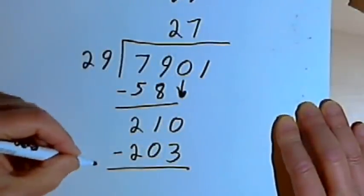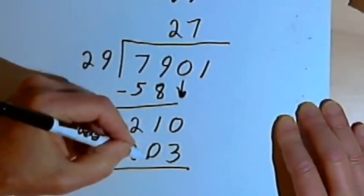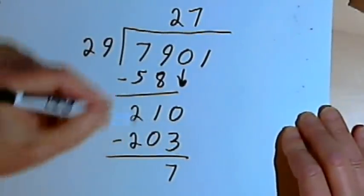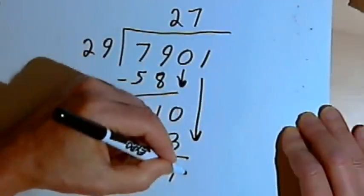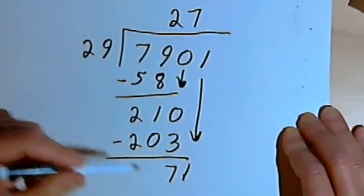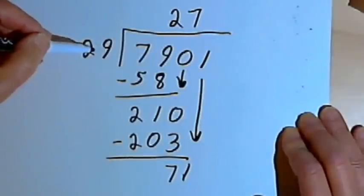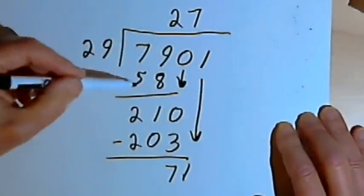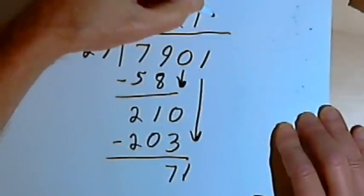Now I'm ready to subtract. 210 minus 203 is 7. And I'll bring down the next number, which is a 1. I want to divide 29 into 71. Well, I already know that when I divided 29 into 79, it went 2 times, and 2 times 29 is 58. So I'm going to use 2 again.